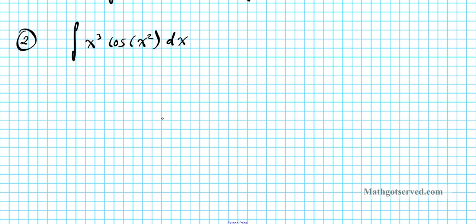In this problem, we can clearly see that u-substitution can be used here. The reason why we can't go directly into integration by parts is because of this x squared, which poses some complexity. What we'll do is rewrite it in a way where u-substitution is obvious. We split x cubed into x times x squared, giving us the integral of x squared cosine(x squared) times x dx.